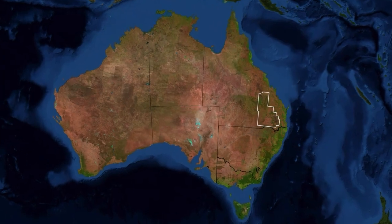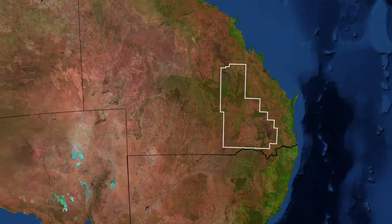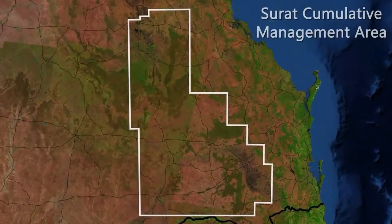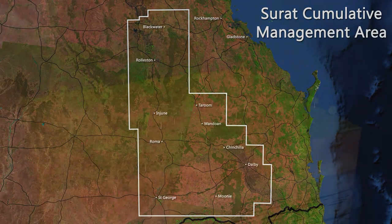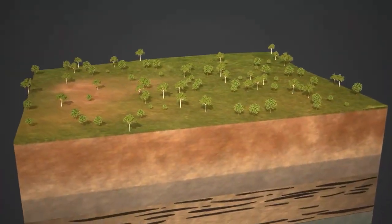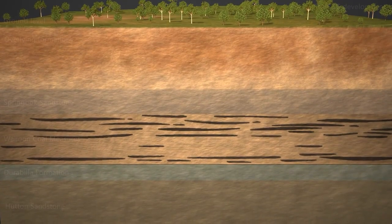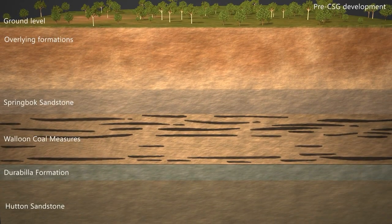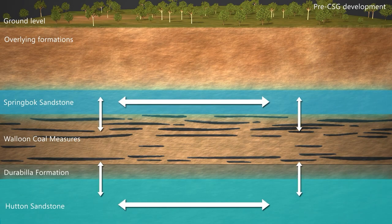This video presents how groundwater impacts may occur in aquifers surrounding the coal seam gas formations in the Surat Basin in Queensland, Australia. Similar to the way water in rivers and streams moves from higher to lower elevations, groundwater in porous formations or aquifers moves from high pressure to lower pressure. The pressure difference drives the way water moves, both within and between aquifers.